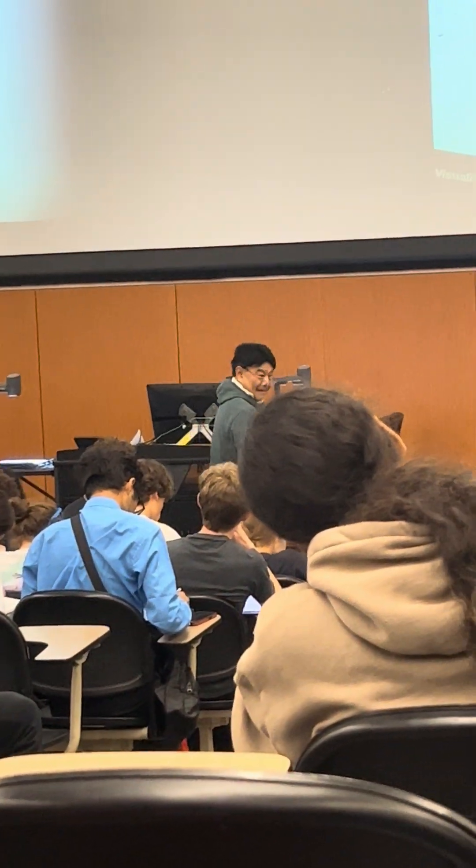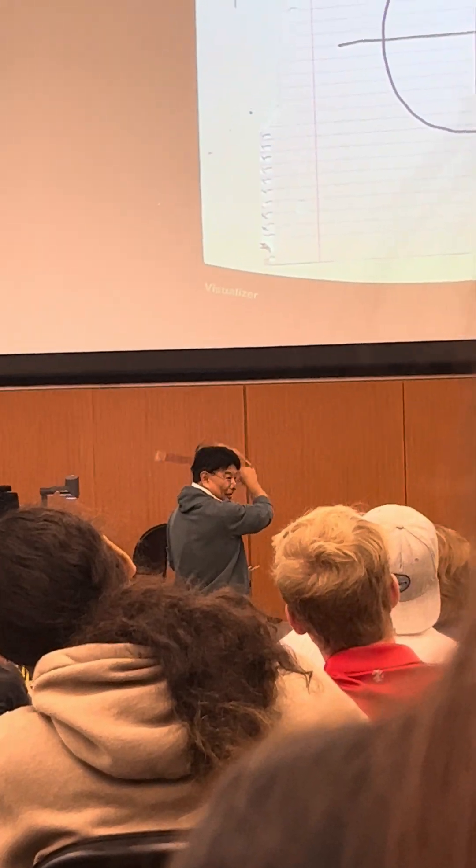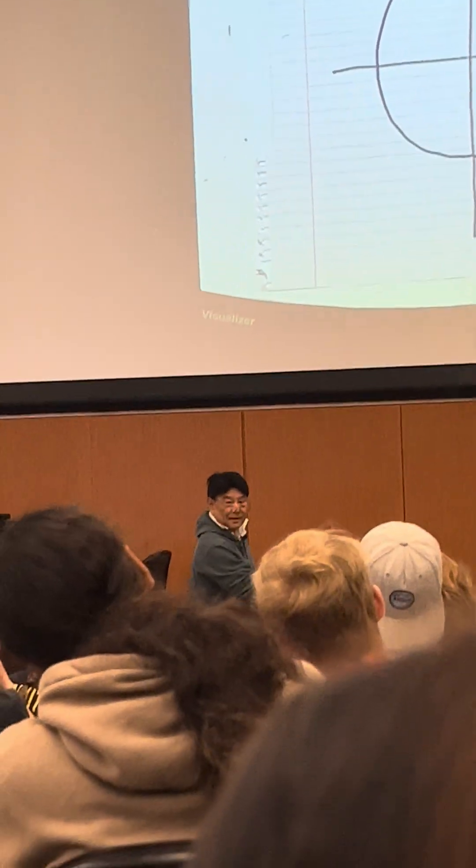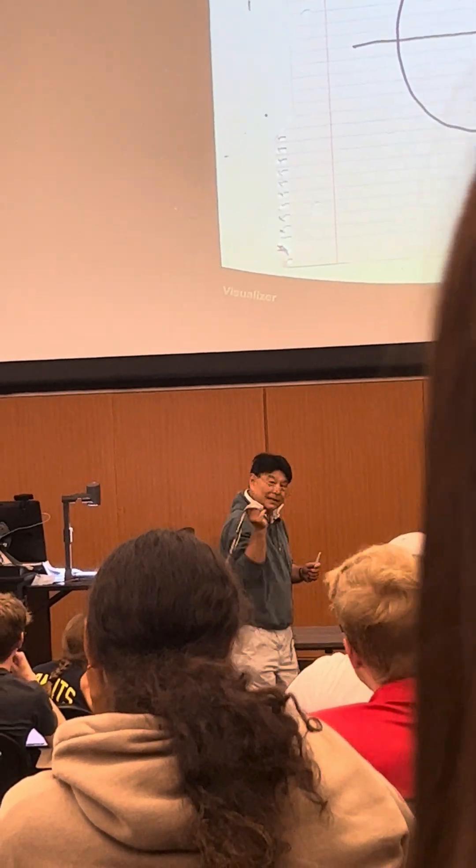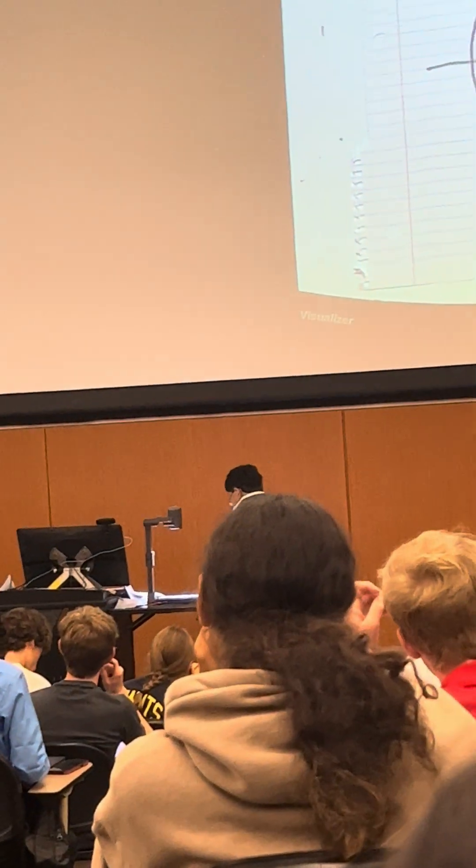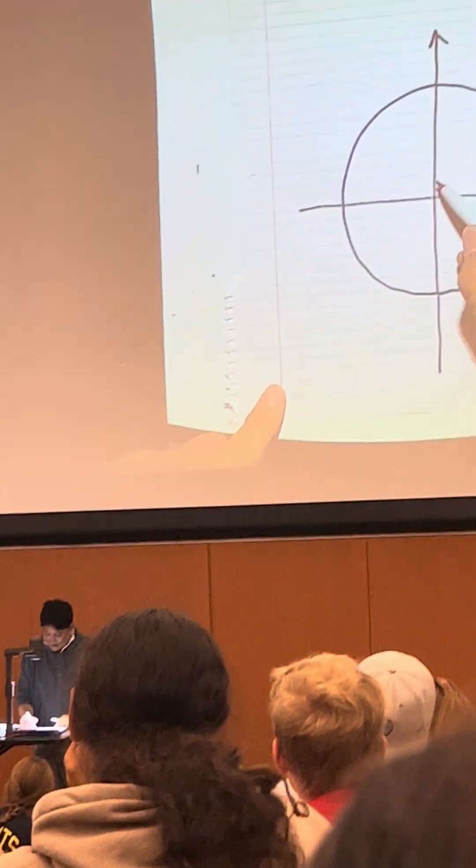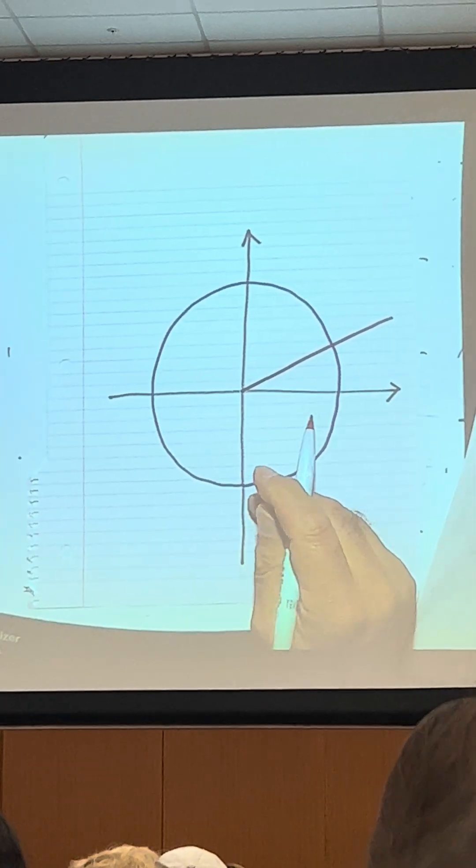That's unit circle. Do you see what I'm drawing? Can I have your key again? I like your key. So this is what I'm seeing. Do you see the unit circle? And this one is rotating. That's rotating.